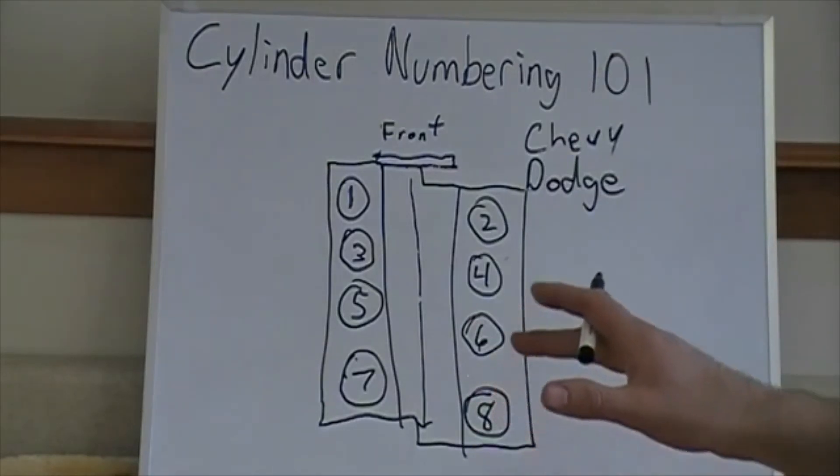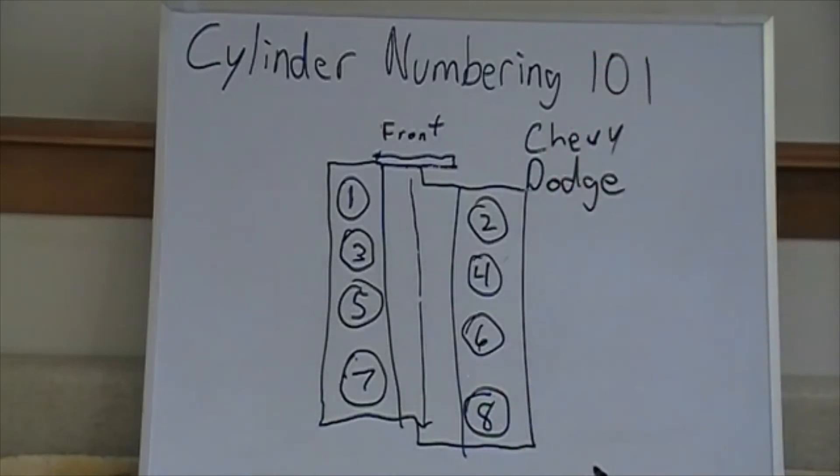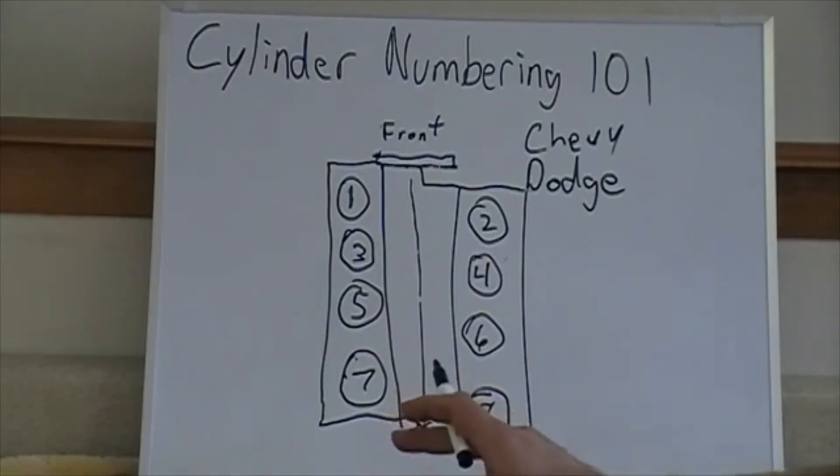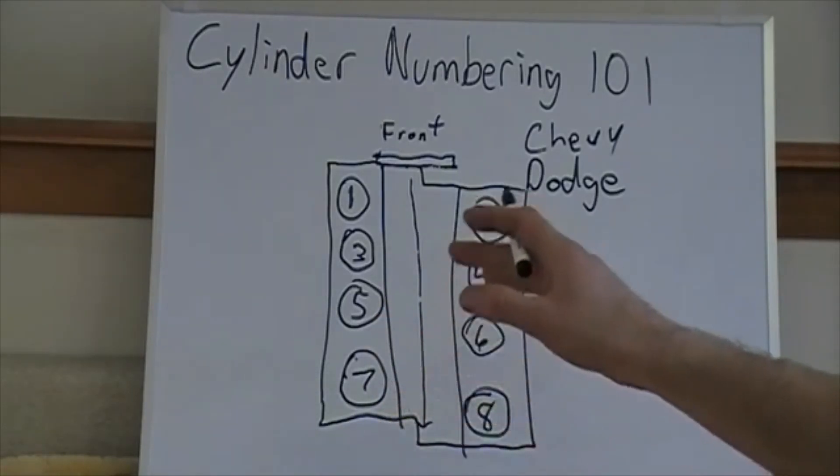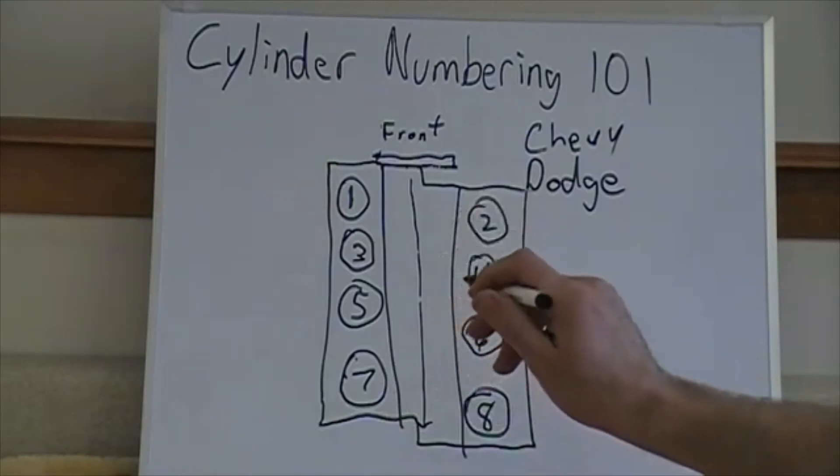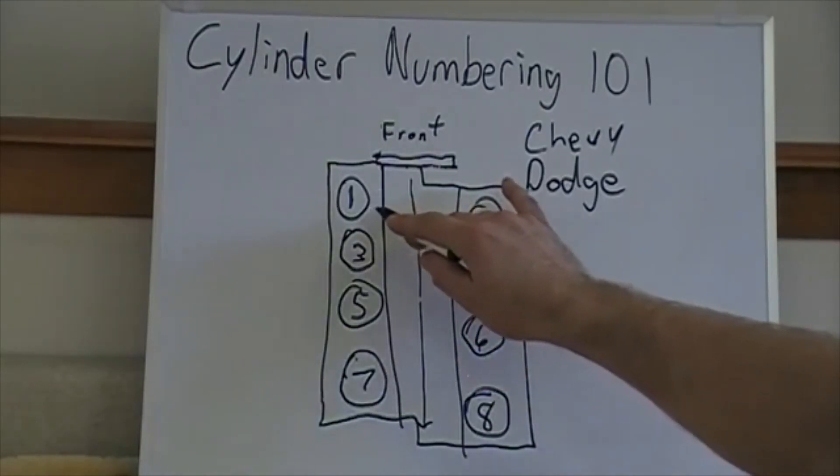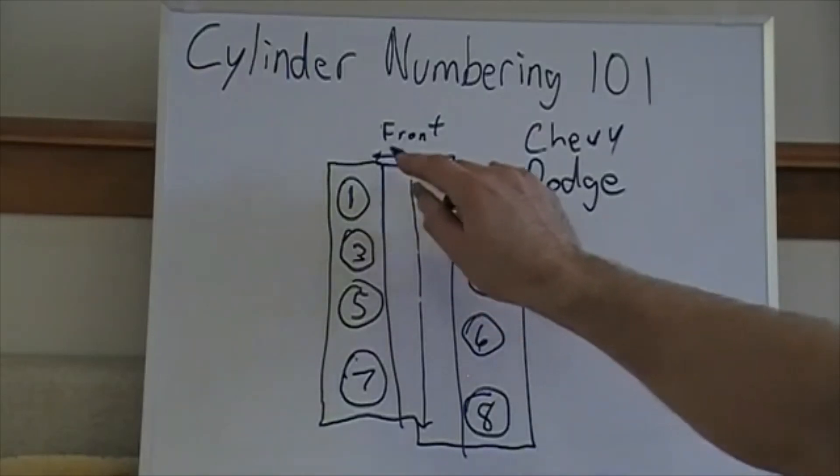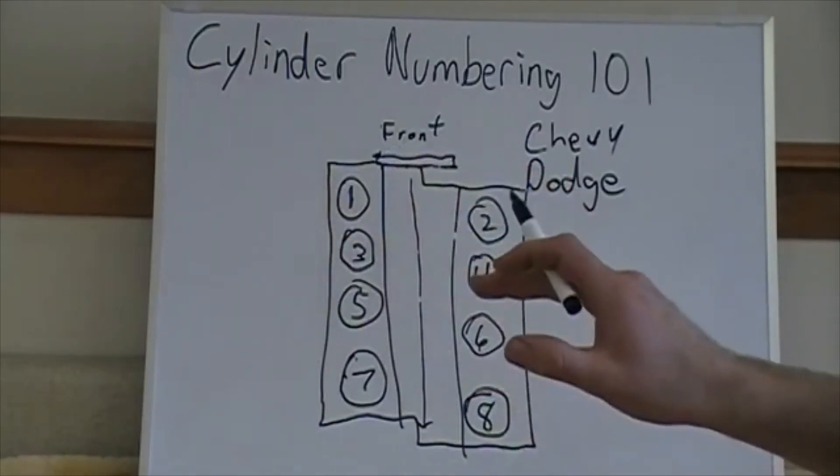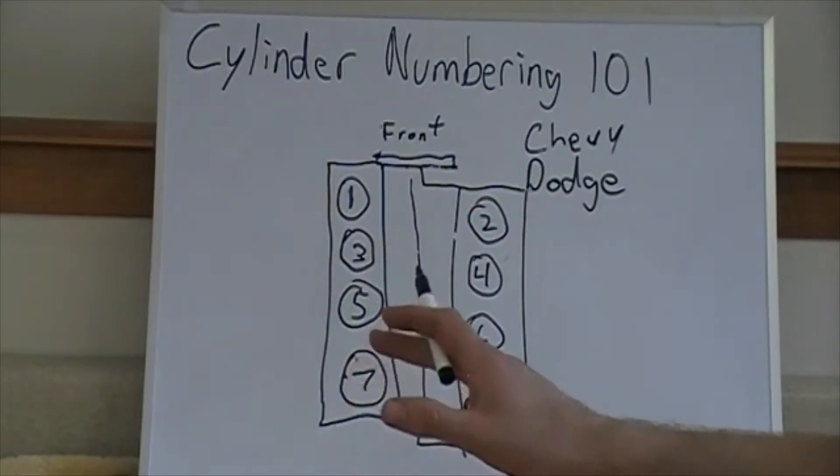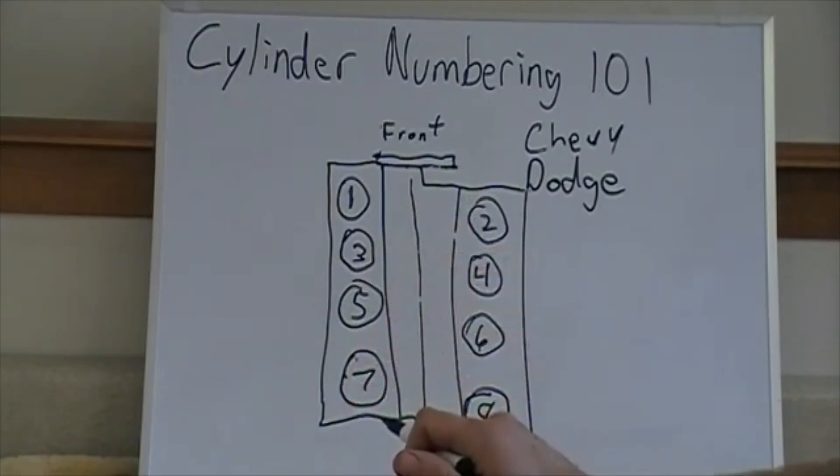As we get into the newer times some of them do a little bit different. One of the relatively universal truths is, when I say relatively universal I can't think of an example where this is not the case, cylinder number one will always be the farthest towards the front on the engine. The rest of this stuff is kind of up to what the engineer decides they want to number it.